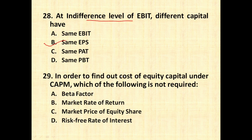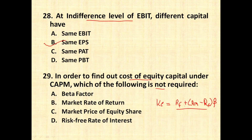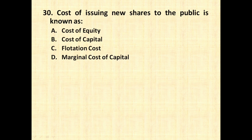The next question: to find out cost of equity (KE) under the CAPM model — capital asset pricing model — which of the following is not required? The formula for KE under CAPM is: KE = RF + (RM − RF) × Beta. RF is the risk-free rate of return, RM is the market rate of return, and Beta is the risk factor associated with that market. All three are required. The market price of an equity share is not required under the CAPM model.